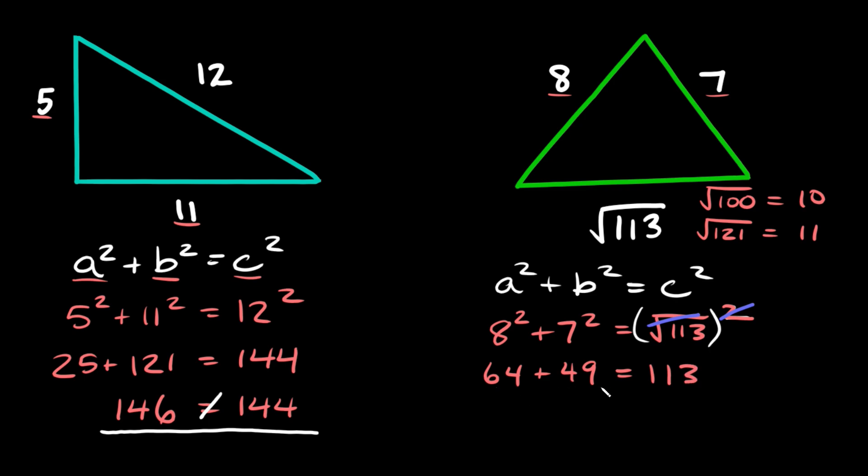Now here, 64 + 49, that's equal to 113. So here we get that 113 = 113. That's obviously a balanced equation. So that means this triangle right here is a right triangle and the right angle would go up here on top.